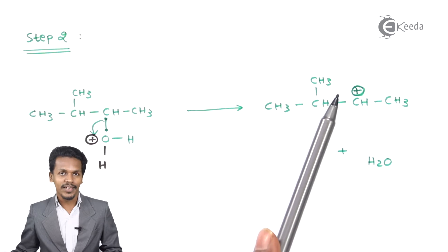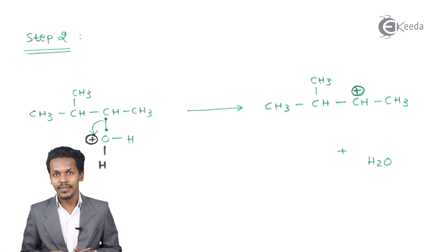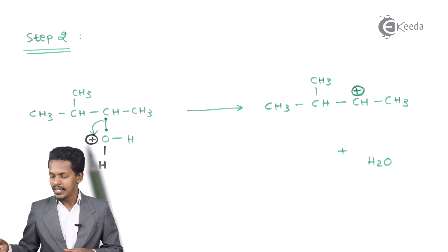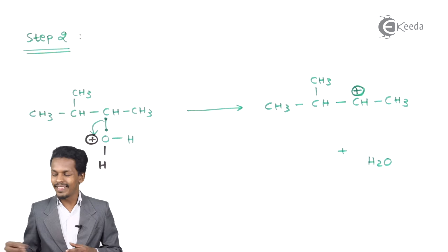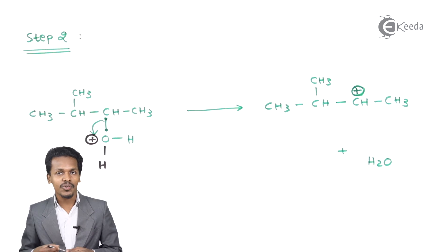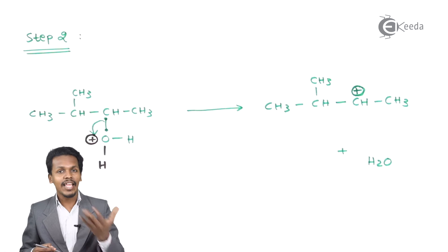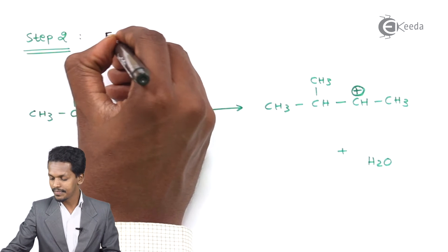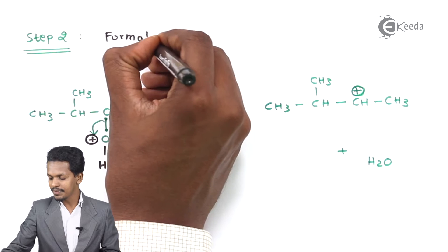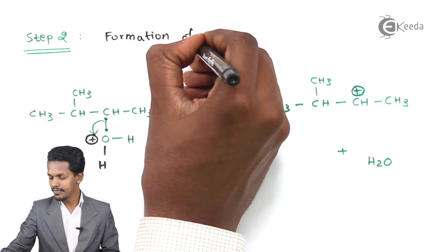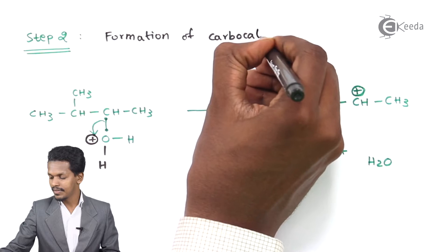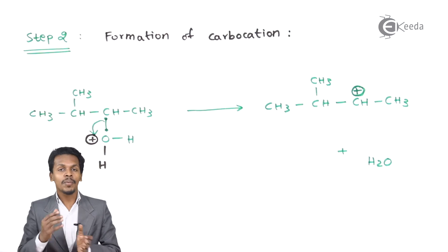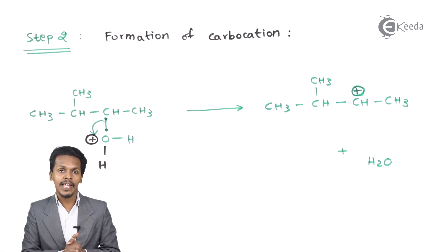This product formed has a positive charge on it, so a carbocation has been formed. Therefore the name of step 2 is: formation of carbocation.